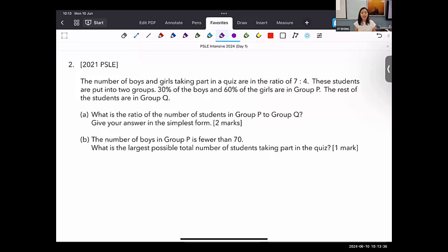The number of boys and girls taking part in a quiz are in the ratio of 7 to 4. This is what we call a part-whole problem, because we know that the whole in this case is the number of students, and then we have the ratio to tell us how many parts are boys, how many parts are girls of the total.